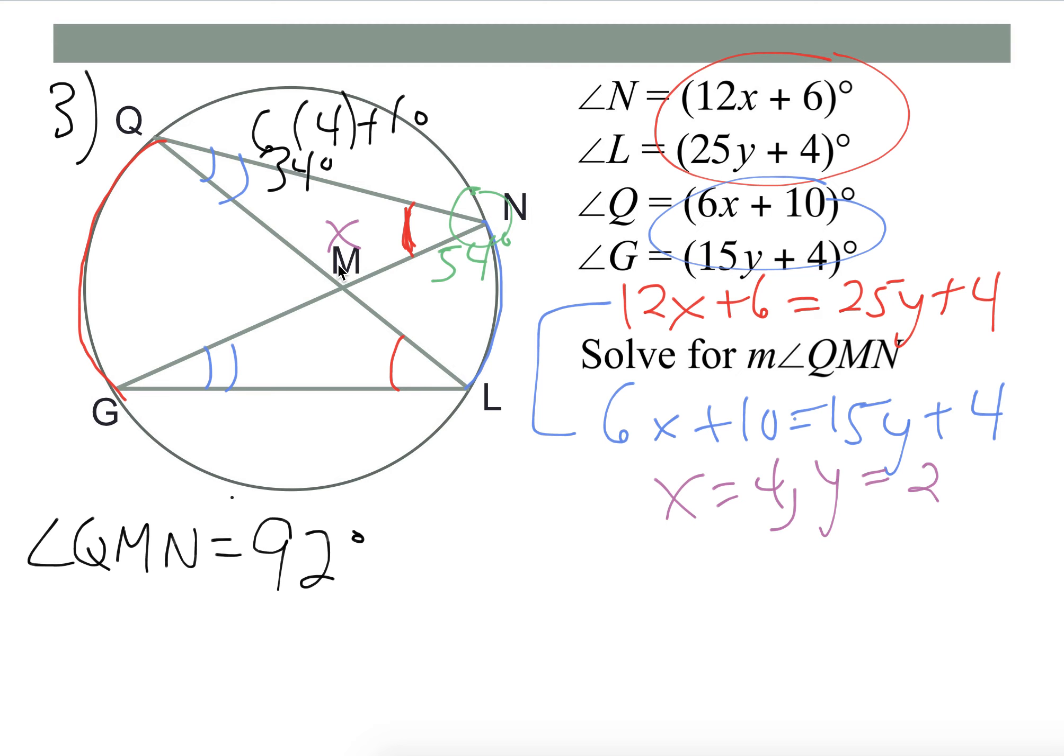So 180 minus 34 plus 54, we would get 92 for angle M, or angle QMN. Okay, so it's not all the work, but again, we've done a bunch of systems, so hopefully you're okay with that part.